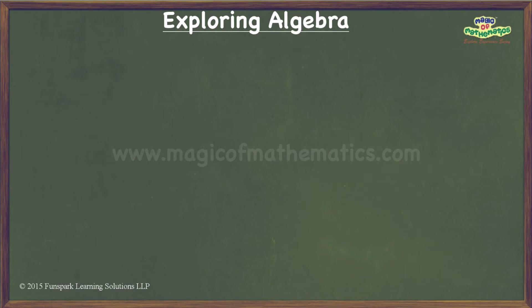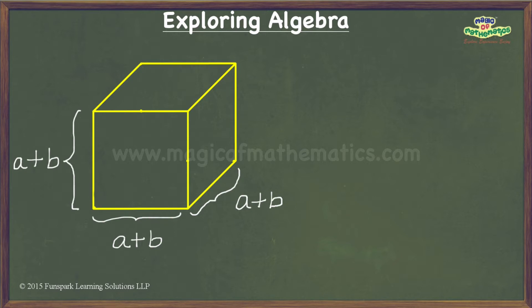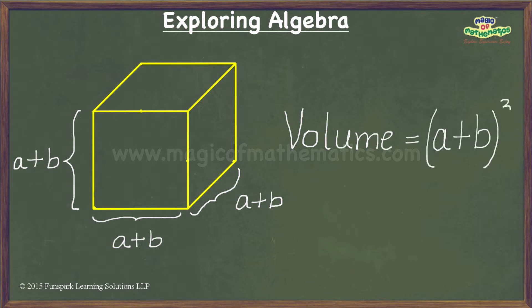Let us now get down to the task at hand. Let us consider a cube of dimension a plus b units. We know that the volume of such a cube is a plus b, the whole cube. We will take this cube and cut it into smaller pieces such that the resulting pieces are cubes and cuboids with edges of lengths a units or b units only.